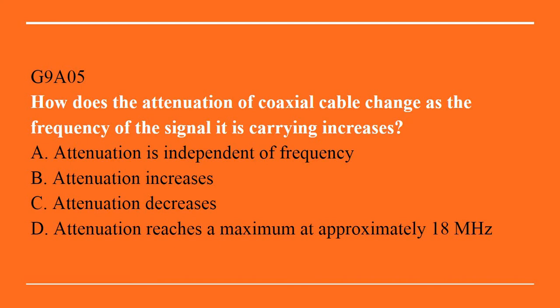G9A05: How does the attenuation of coaxial cable change as the frequency of the signal it is carrying increases? A. Attenuation is independent of frequency. B. Attenuation increases. C. Attenuation decreases. Or D. Attenuation reaches a maximum at approximately 18 megahertz. The answer is B, attenuation increases.